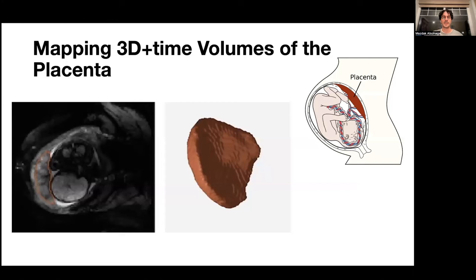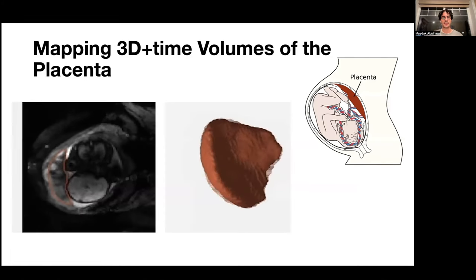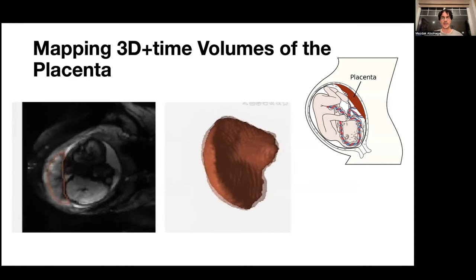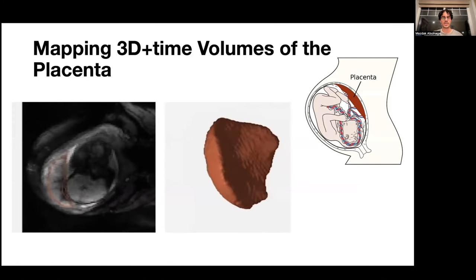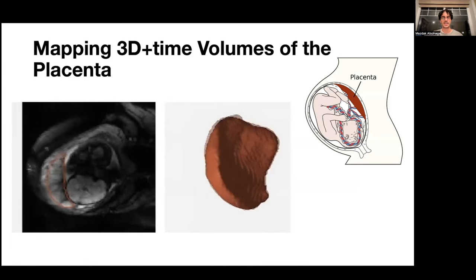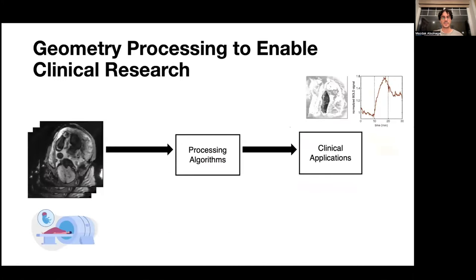Zooming out a bit, a key motivating application of this work is to improve the analysis of placental health during pregnancy. The placenta delivers oxygen and nutrients to support the growing fetus, and we collect 3D MRI scans over time to monitor the placenta. As there is large distortion and deformations, mapping is key to monitor function.